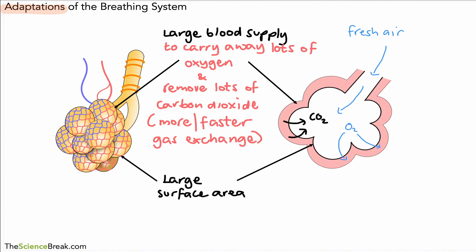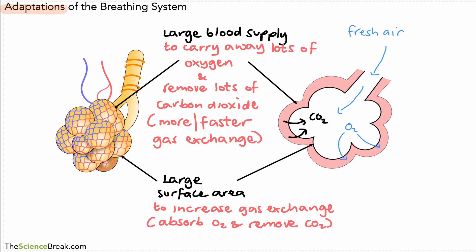If you look at the shape of the alveolus, you'll also notice that it has a large surface area. The way it's shaped gives it a large surface area, which means we can increase the amount of gas exchange that goes on. If you've got more surface area, you've got more surface to absorb oxygen or remove carbon dioxide. So the large surface area is also very important.